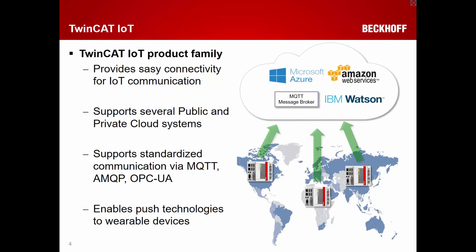TwinCat IoT is all about standardized communication, meaning you can use protocols like MQTT, AMQP, and OPC UA to establish connectivity to cloud services. TwinCat IoT also has its own smartphone app, enabling push notifications to wearable devices. You can use function blocks within your PLC logic to send alarms to wearable devices.